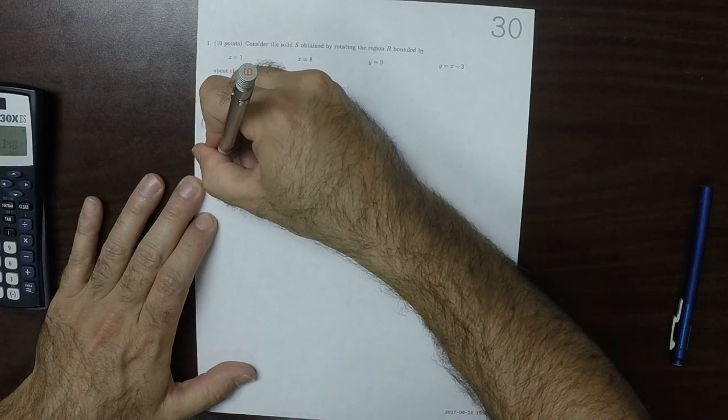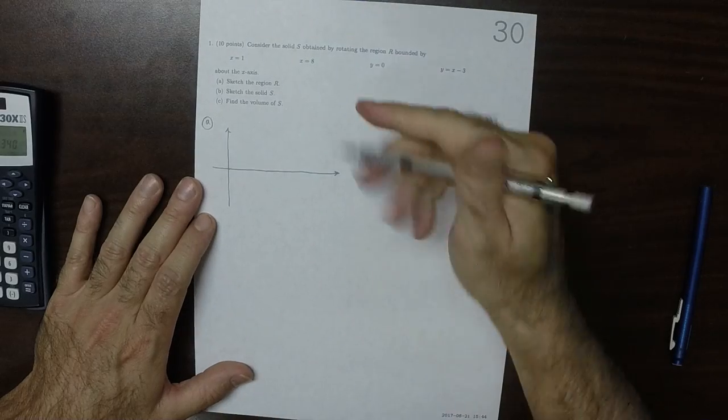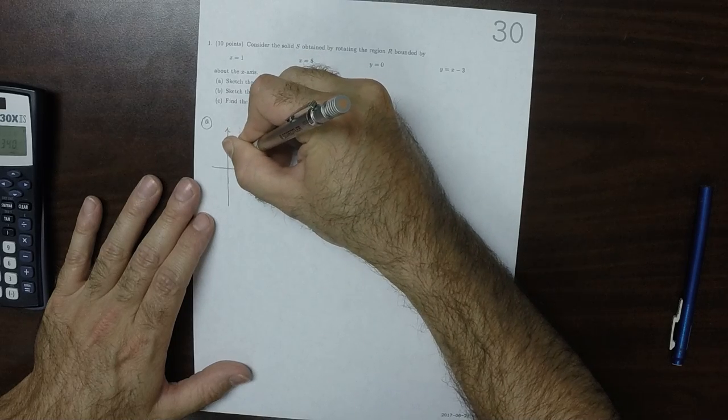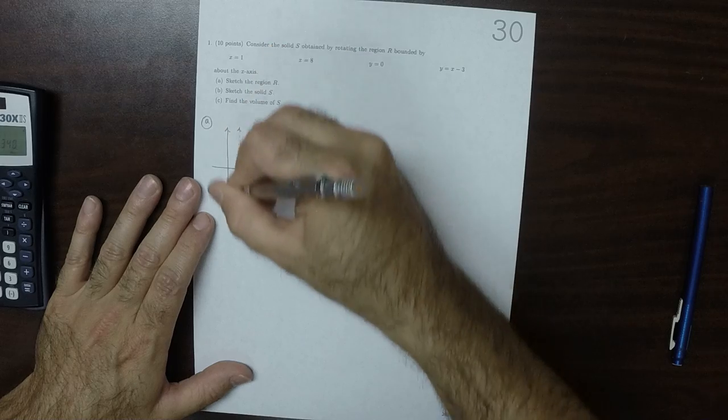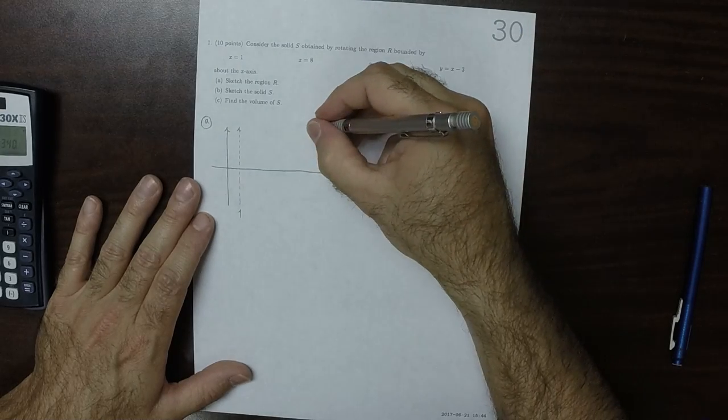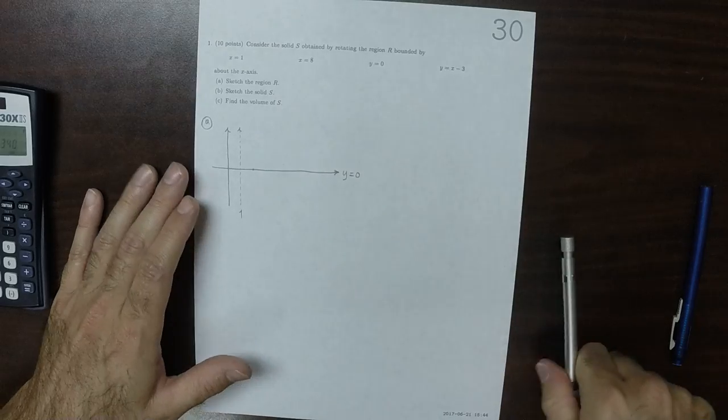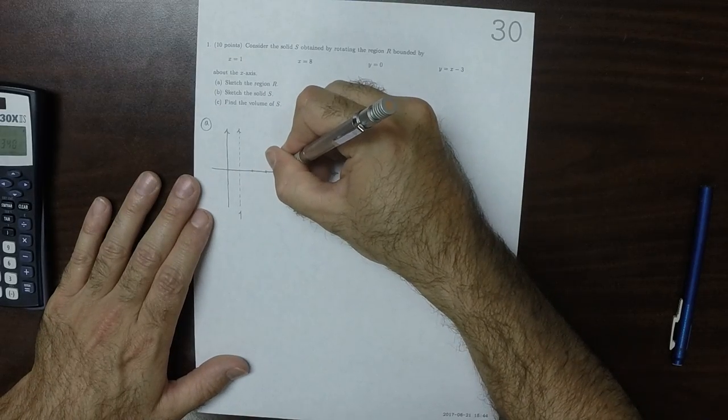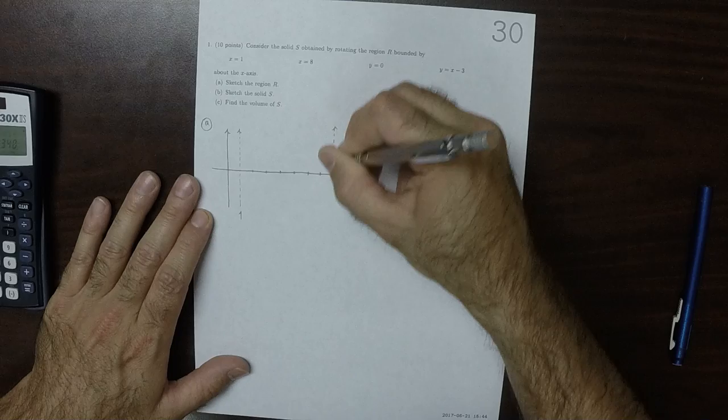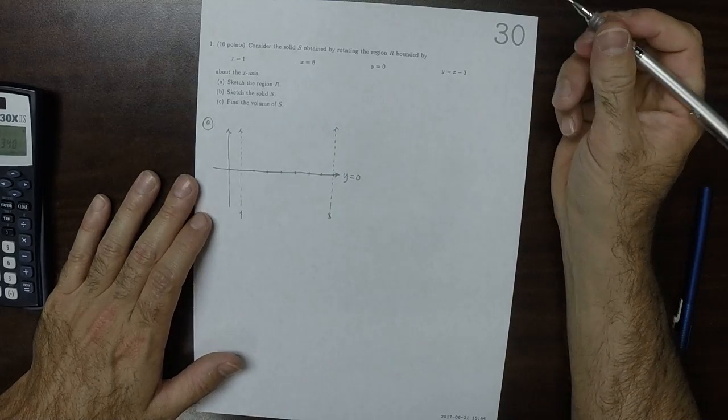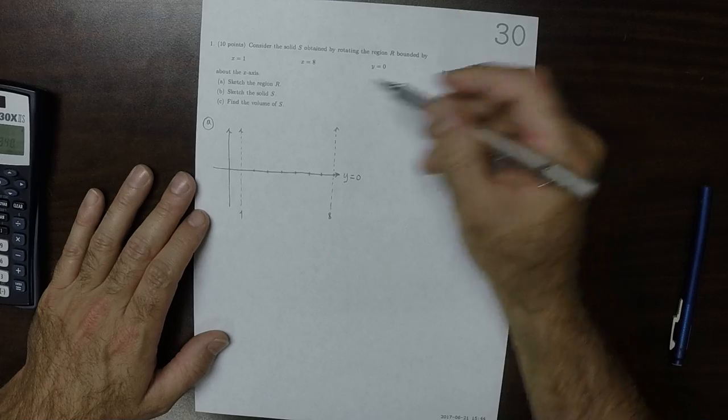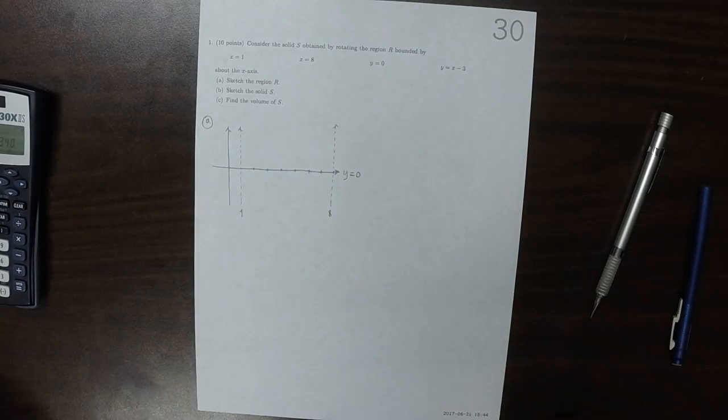So, this is y is 0, x is 1 is this vertical line, so that's x is 1, and then x is 8 is, so if that's 1, 2, 3, 4, 5, 6, 7, 8, so that's 8. And then now we have this line y is x minus 3. Well, at x is 3, that is to say right here, 2, 3, we have 0.